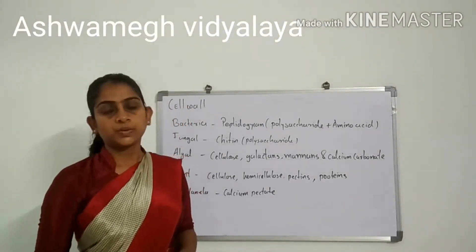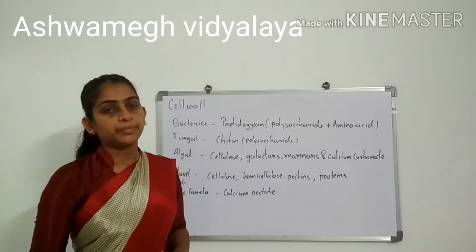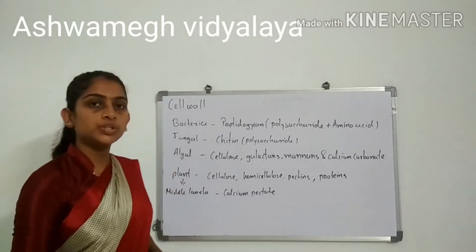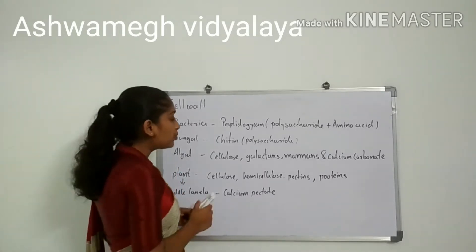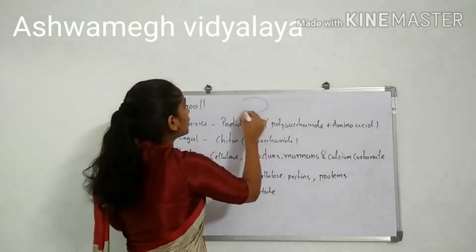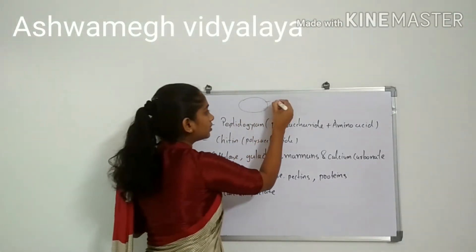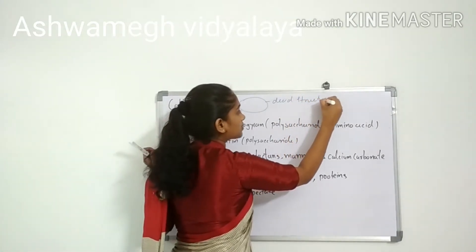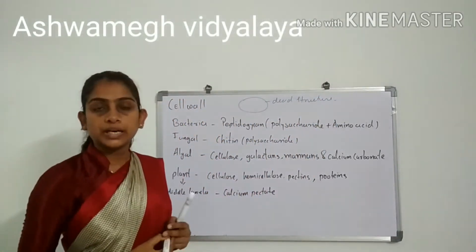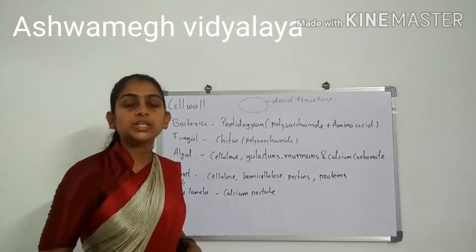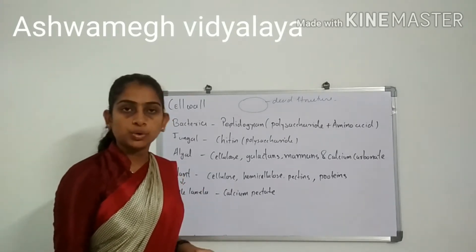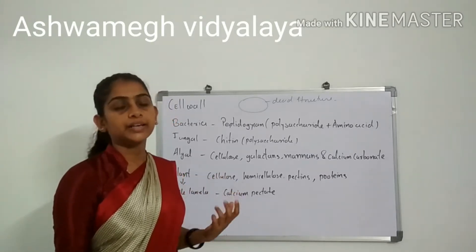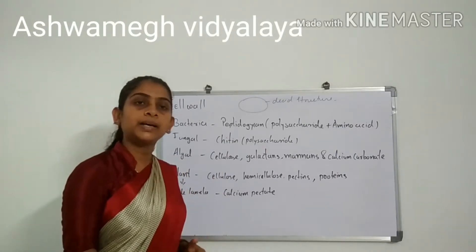Hello students. In the last video we discussed about cell membrane. Right now in this video we will discuss about cell wall. Cell wall is the outermost layer which protects against mechanical damage and gives the cell its specific shape.